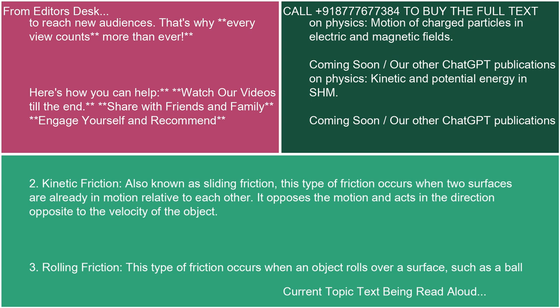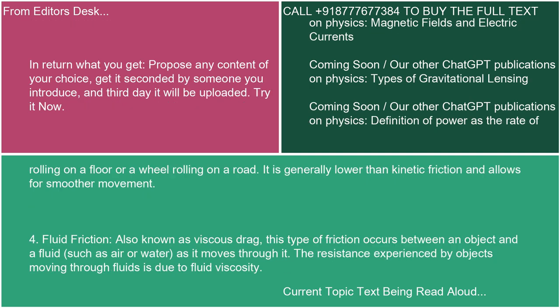3. Rolling Friction: This type of friction occurs when an object rolls over a surface, such as a ball rolling on a floor or a wheel rolling on a road. It is generally lower than kinetic friction and allows for smoother movement.